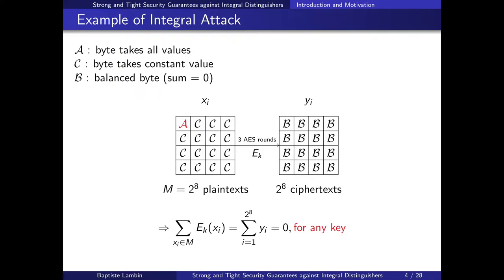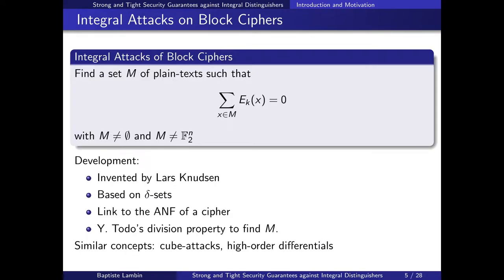The important part is that this holds for any key. In general, the framework of integral attacks is to find a set M of plaintexts such that the XOR sum of the resulting ciphertexts is always equal to zero with probability one, no matter the value of the key. This dates back quite a while — it was introduced by Knudsen with higher-order differentials, then refined with delta sets, where some bytes are constant and others take all values.